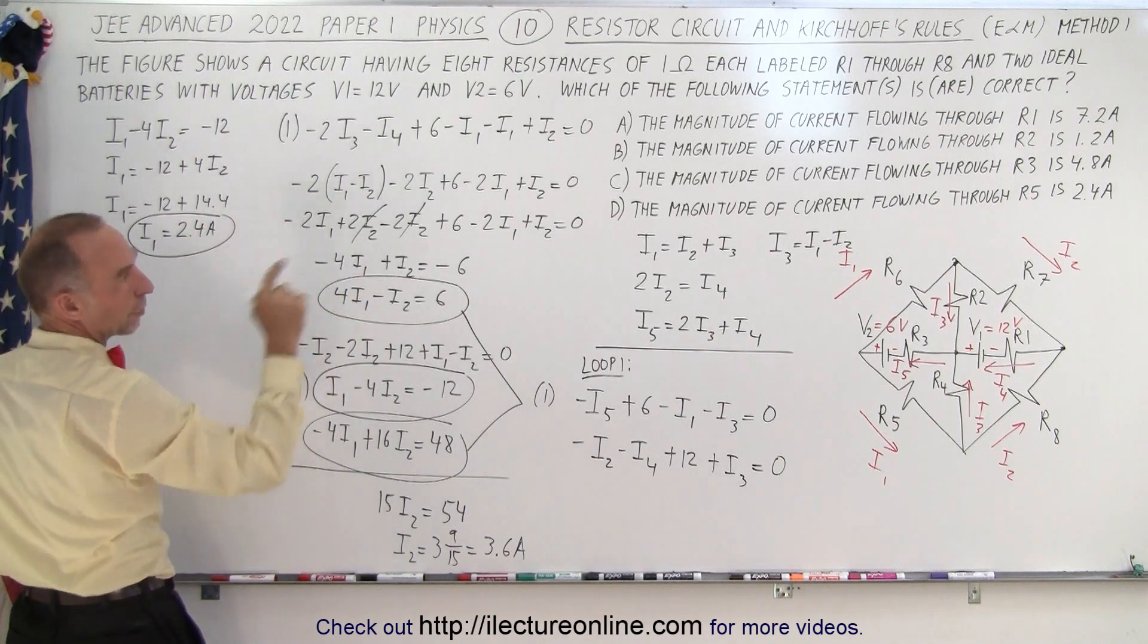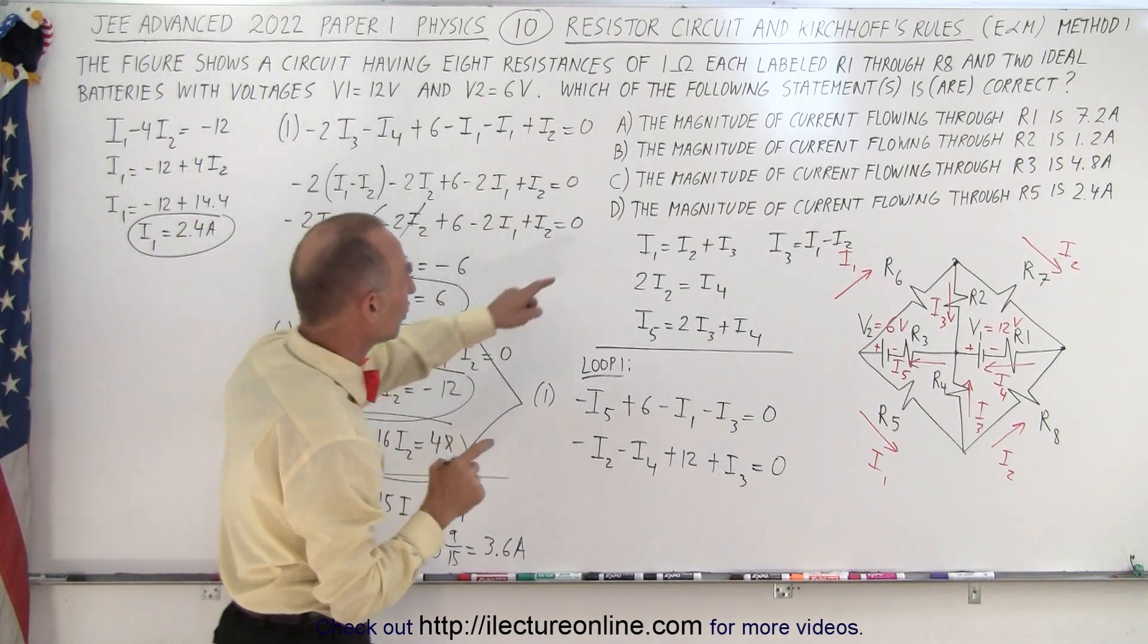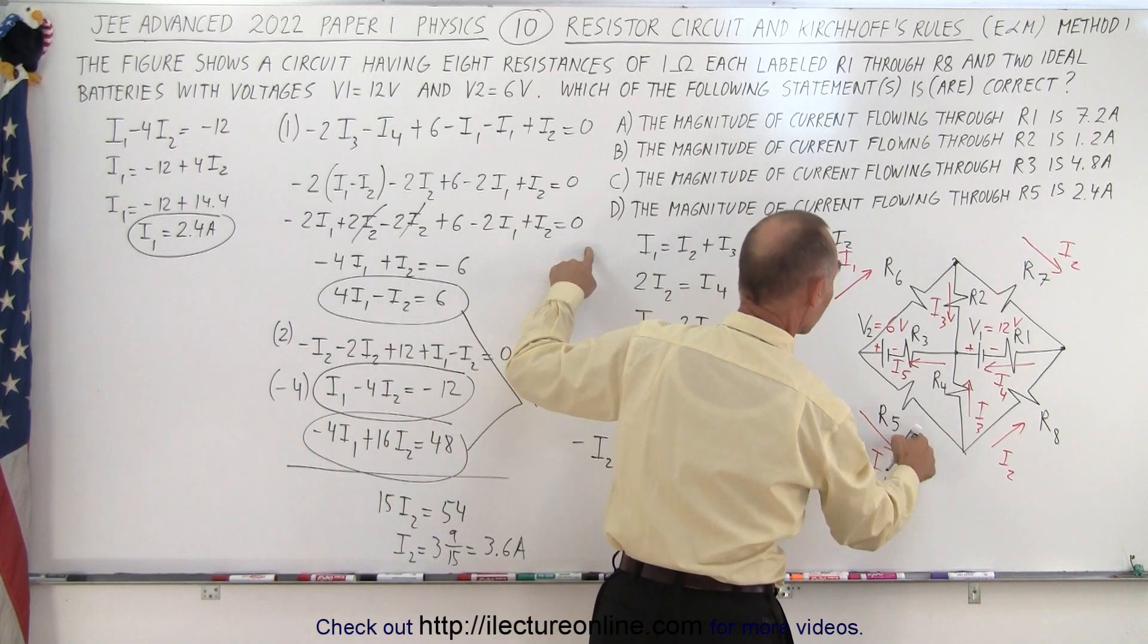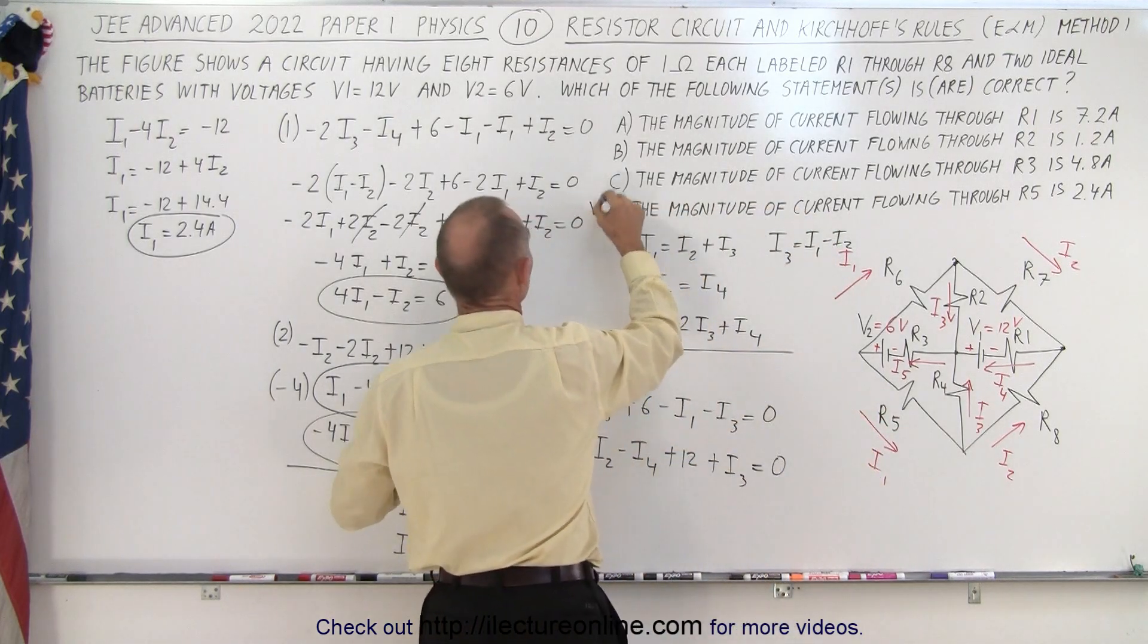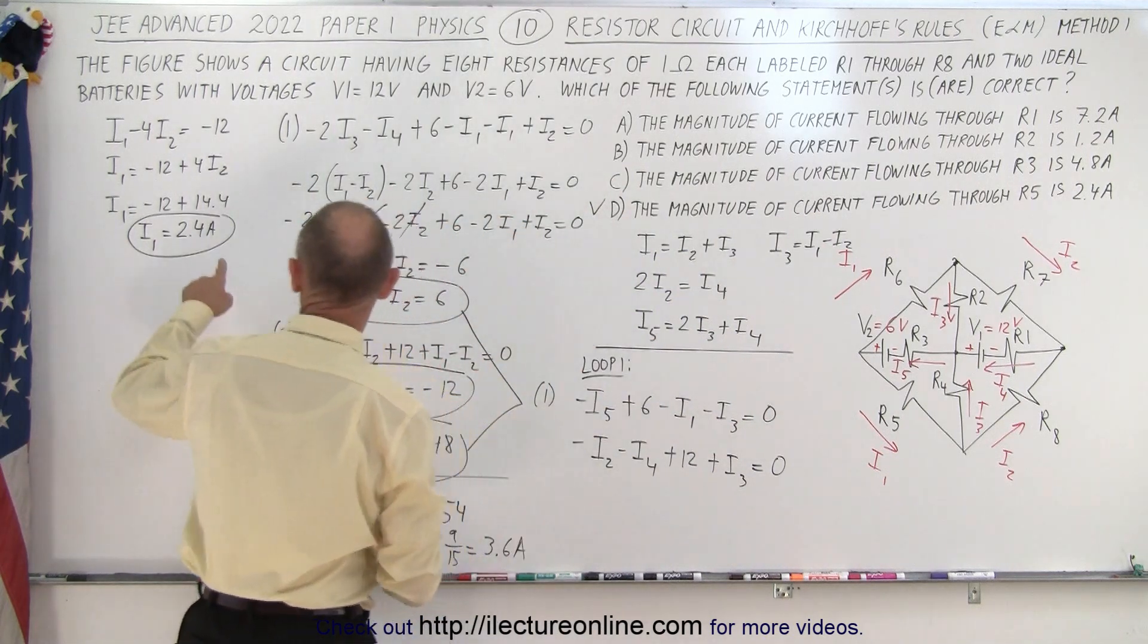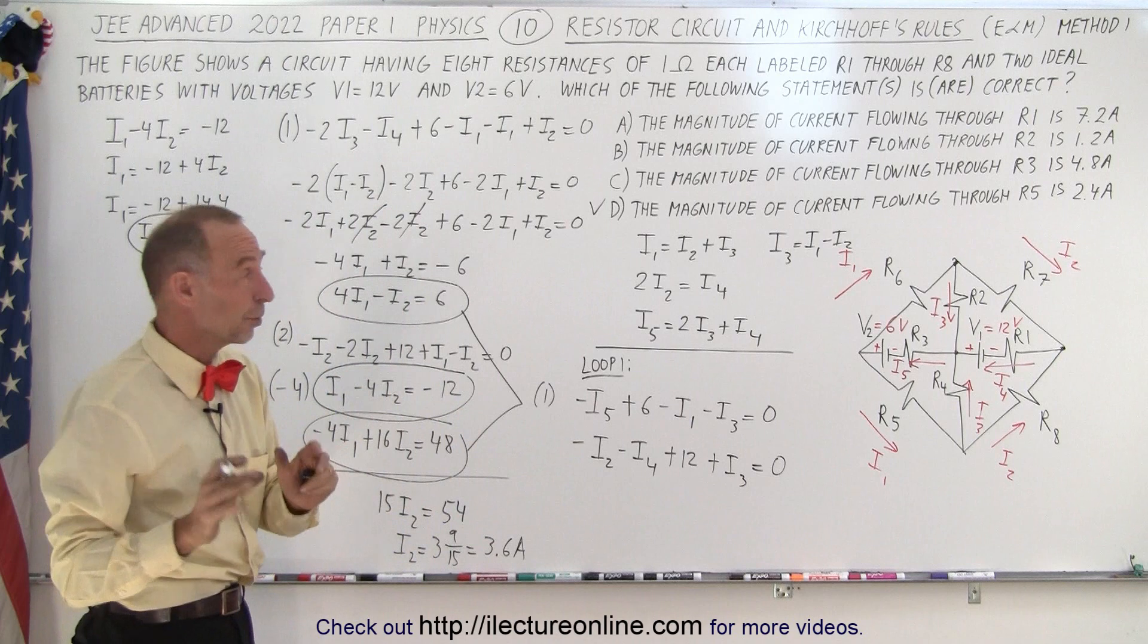Let's see, we have a 2.4 amp up there, yes we do, and that's flowing through R5, which is I1. So that looks like this is correct. We found I1, which flows through R5, and we said it was 2.4 amps, so we're almost there.